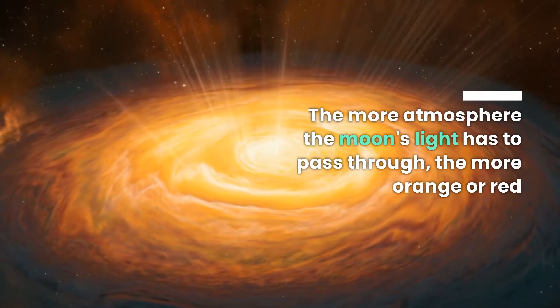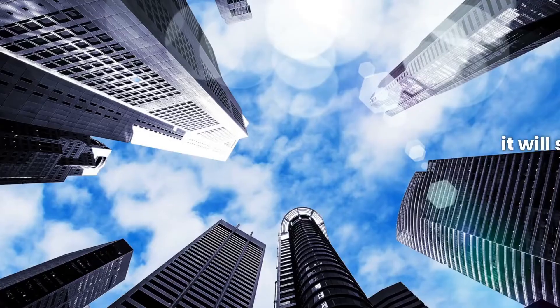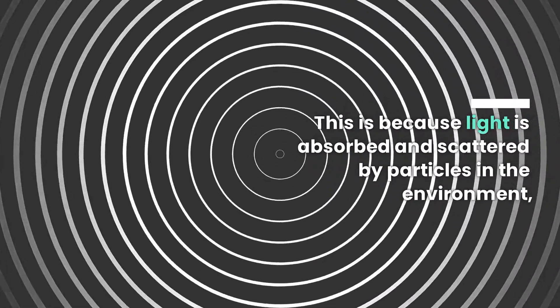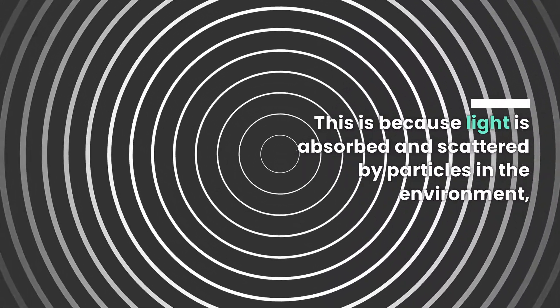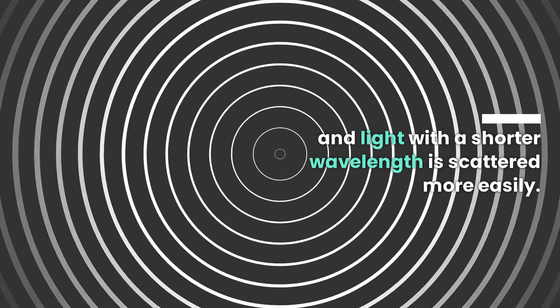The more atmosphere the Moon's light has to pass through, the more orange or red it will seem. This is because light is absorbed and scattered by particles in the environment, and light with a shorter wavelength is scattered more easily.